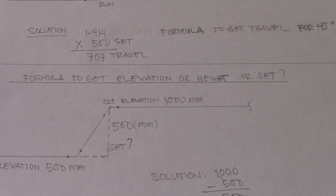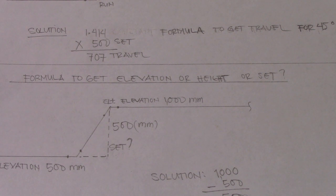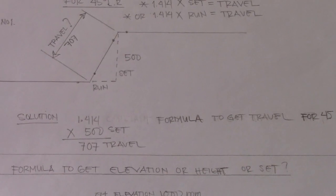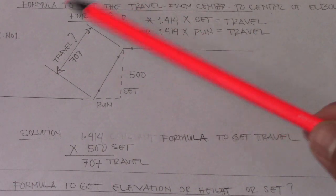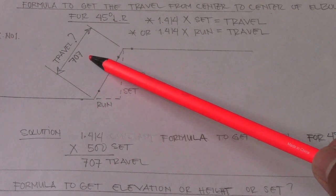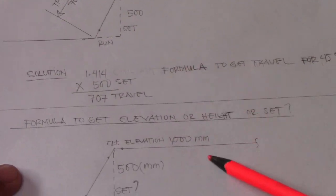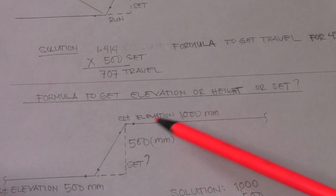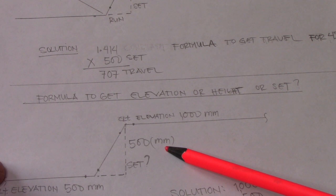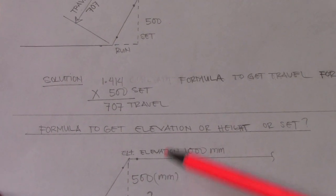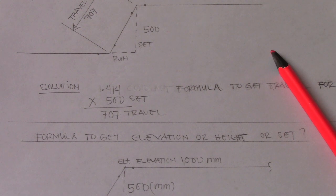This is very simple and very important. To get the travel, just multiply 1.414 by the set — and our answer is 707. To find the elevation, just subtract one elevation from the other — and our answer is 500. Thank you so much guys, I hope you understand. Have a nice day, see you next time!